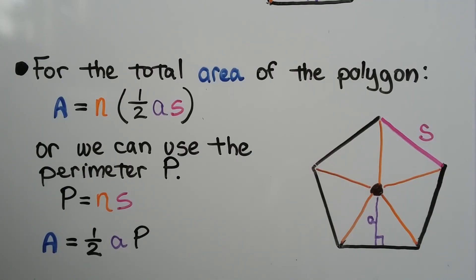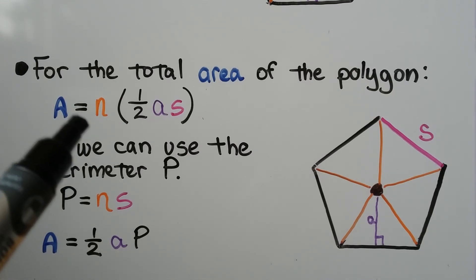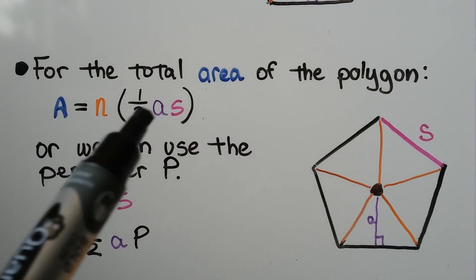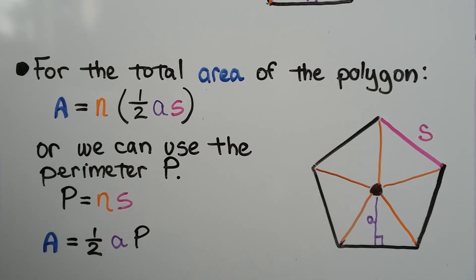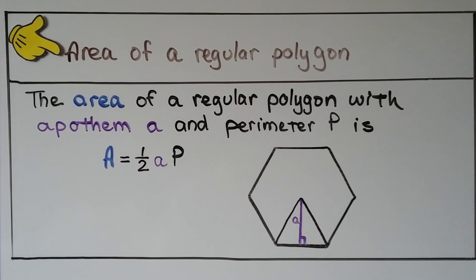For the total area of the polygon, the area equals the number of sides times half times the apothem times the side length. We can use perimeter p, which equals the number of sides times the side length. So our area is equal to half the apothem times the perimeter: A = ½ap.